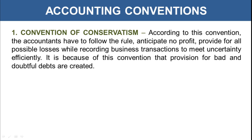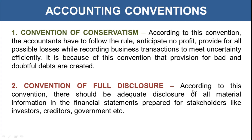The first is the convention of conservatism. According to this convention, accountants must follow the rule: anticipate no profit, provide for all possible losses while recording business transactions. You can only record profit when it is realized — when the transaction is made and the profit is earned. For losses, you must anticipate them in advance. This is why provisions for bad and doubtful debts and reserves are created — to meet future uncertainties.